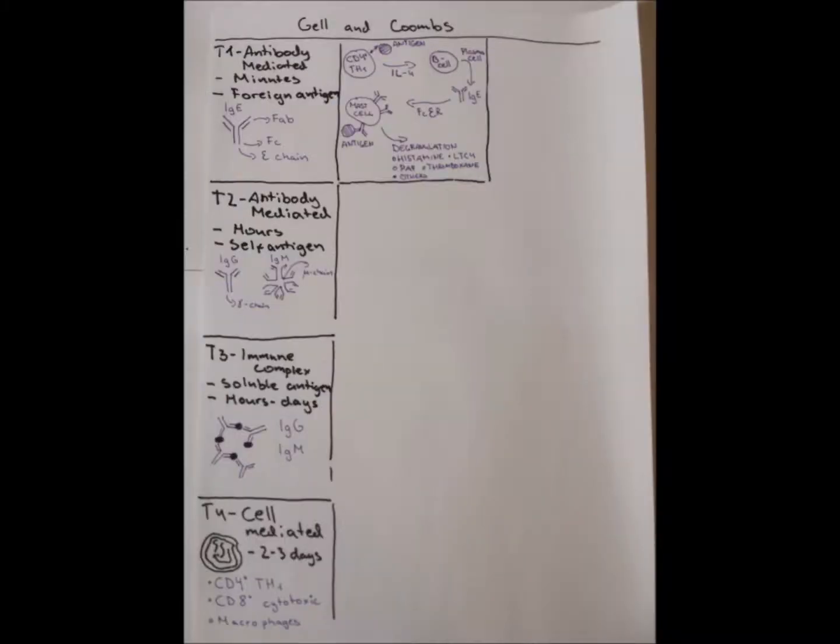Type 1 hypersensitivity reaction occurs when a CD4-positive T-helper-1 cell reacts to an antigen and releases interleukins, which help B-cells differentiate into plasma cells and secrete immunoglobulins, namely IgE. Immunoglobulins then bind to mast cells through their Fc epsilon receptors. When antigen is bound, usually on second exposure, mast cells degranulate and release histamine, leukotrienes, platelet activating factor, thromboxane, and other inflammatory mediators.